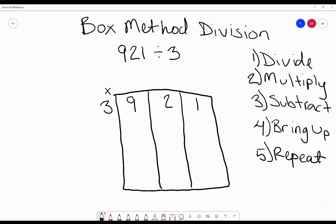So in this example of 921 divided by 3 using the box method, I'm going to model how to solve this equation if you know your multiplication facts. Now that I have my box set up, I'm going to start with step 1 which is to divide.